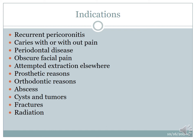The indications for removal of an impacted tooth in general: when there is recurrent pericoronitis, when there is caries with or without pain because caries can cause periapical infection leading to more serious complications especially if the patient is medically compromised, if there is periodontal disease, if there is obscure facial pain, when the tooth has been attempted for extraction elsewhere, for prosthetic reasons, orthodontic reasons, if there is an abscess, if there is an associated cyst or tumour, if the tooth is in the line of fracture, and if the patient is going to undergo radiation.